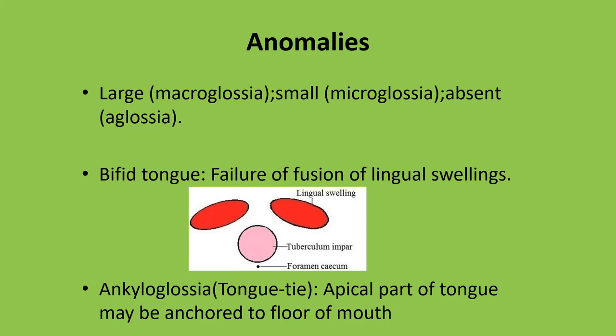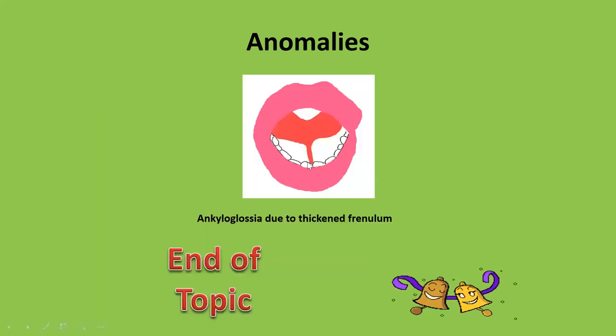Ankyloglossia is tongue tie, where the apical part of the tongue is anchored to the floor of the mouth, making it impossible for the person to touch the upper incisors with the tongue. When tongue movement is restricted, this happens due to a thickened structure called the frenulum — a mucosal fold present on the undersurface of the tongue. The frenulum may be overdeveloped or thickened, resulting in tongue tie. Here we see the over-thickened frenulum leading to restricted tongue movement.